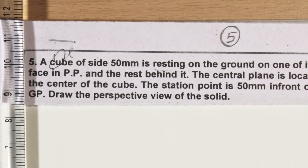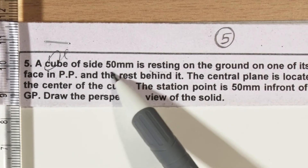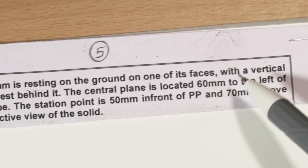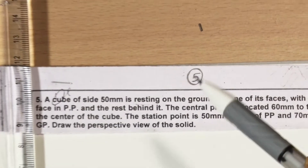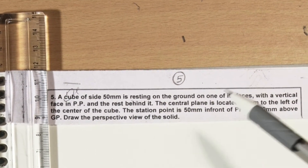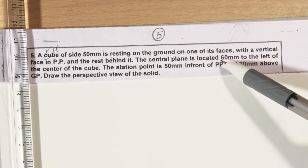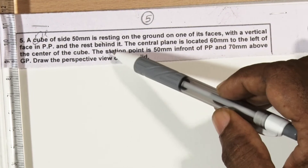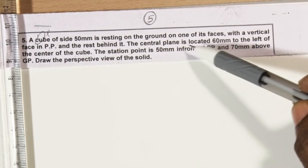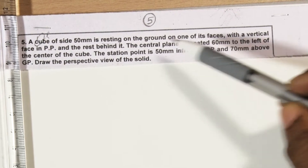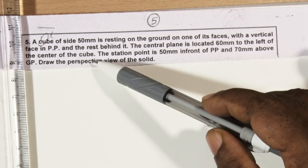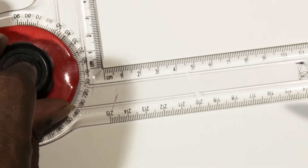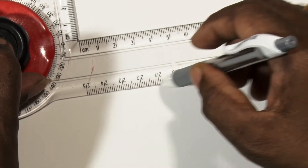Problem number five: a cube of side 50mm is resting on the ground on one of its faces, with a vertical face in the picture plane and the rest behind it. The central plane is located 60mm to the left of the center of the cube. The station point is 50mm in front of the picture plane and 70mm above the ground plane. Draw the perspective view of the solid.